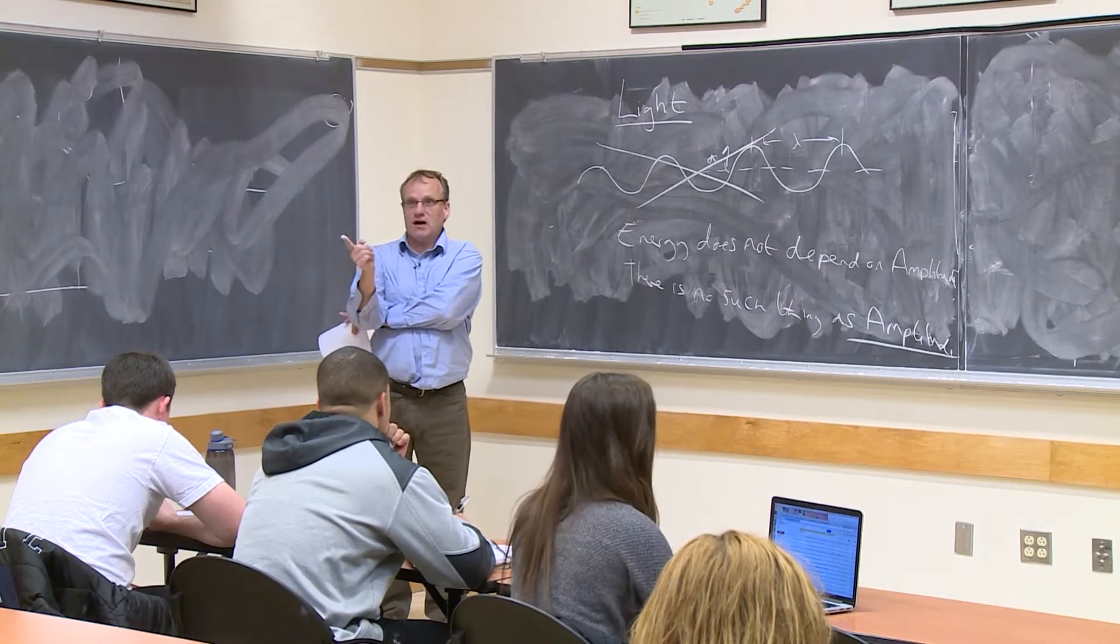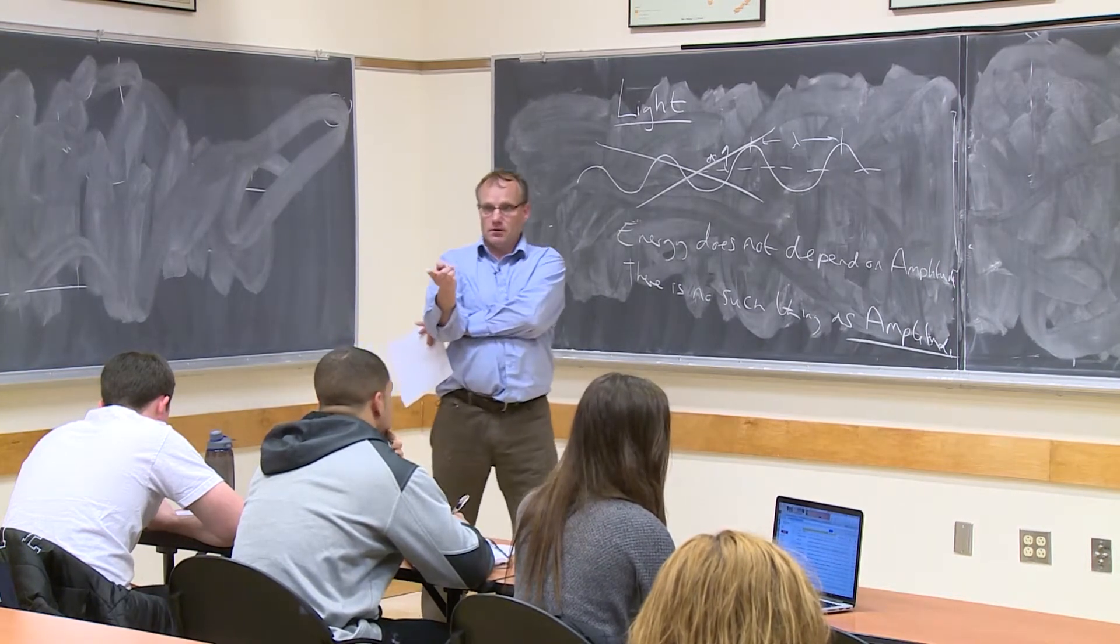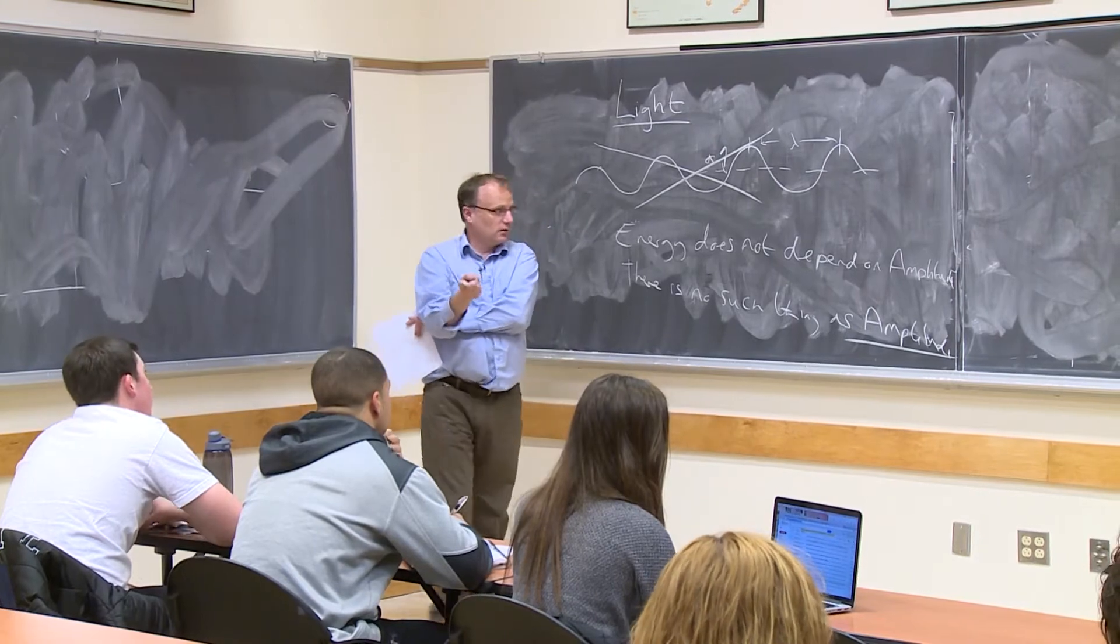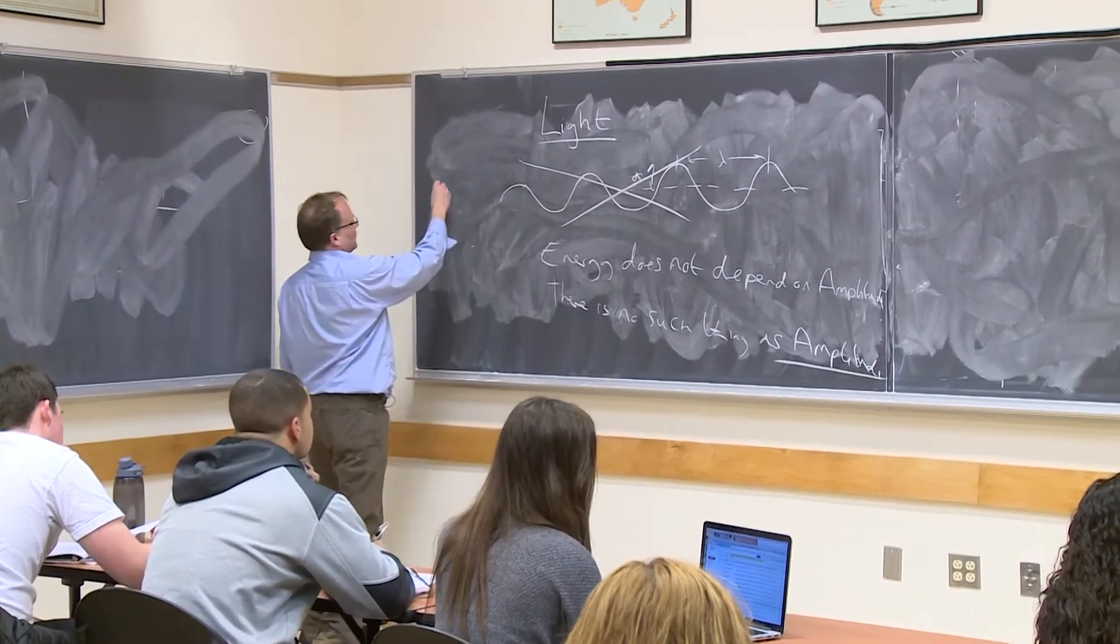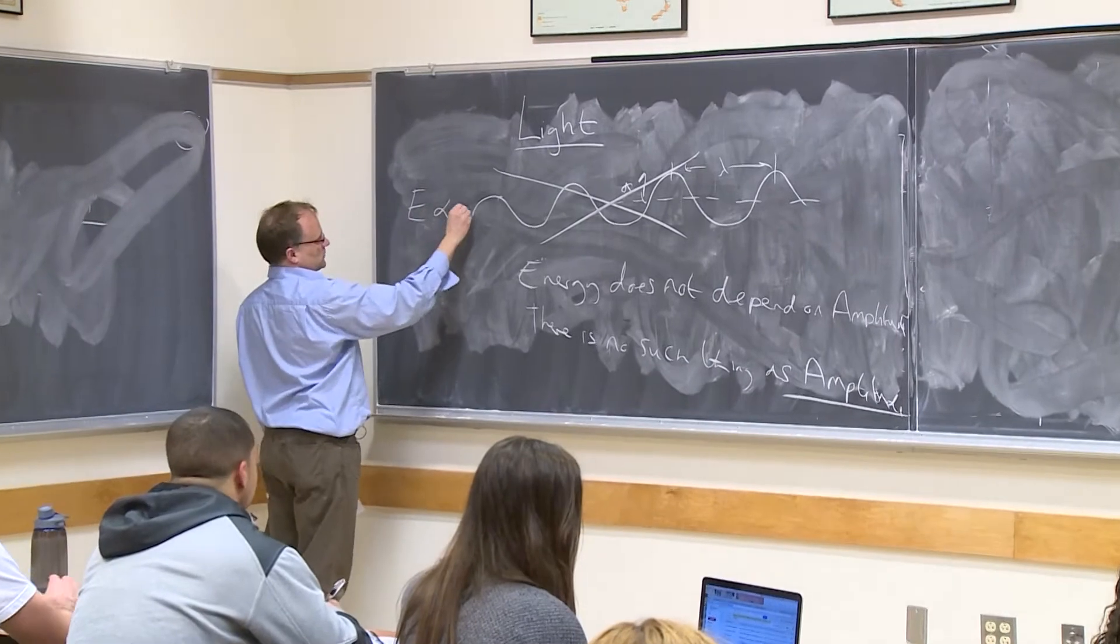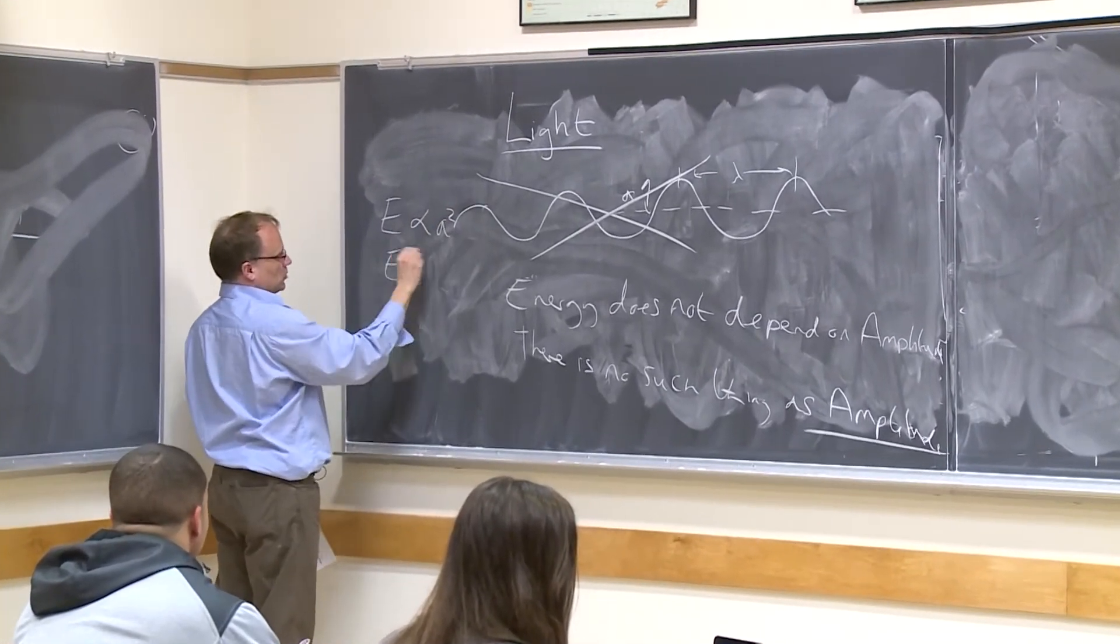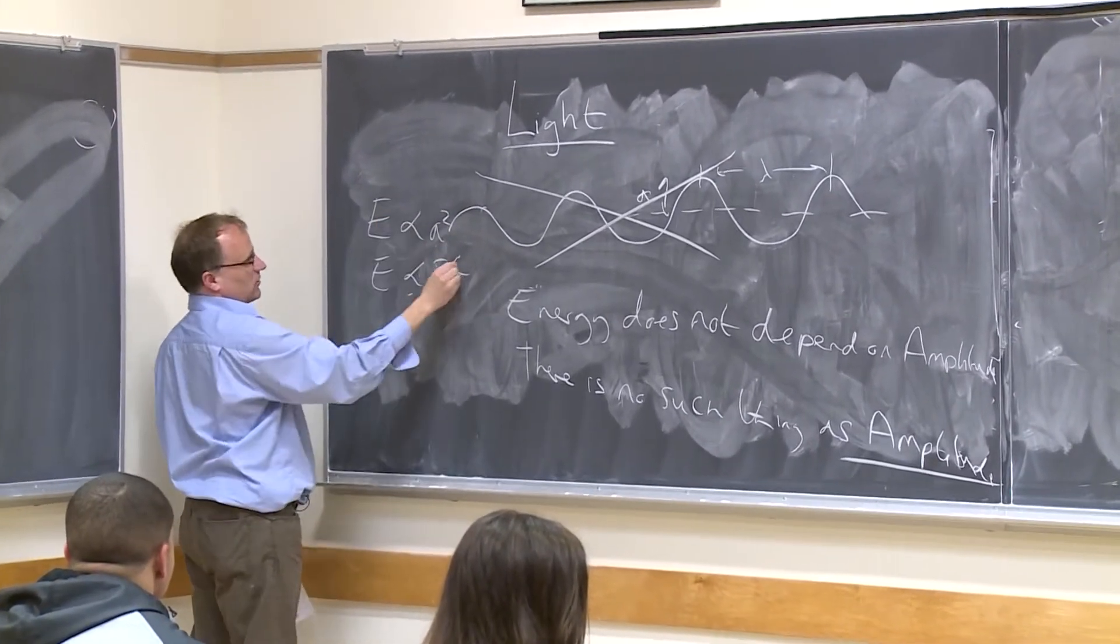Instead of amplitude, we actually have the number of photons. So now the model, the previous model, this model of a wave, would have energy proportional to amplitude squared, energy proportional to frequency squared. This is your classical wave model.